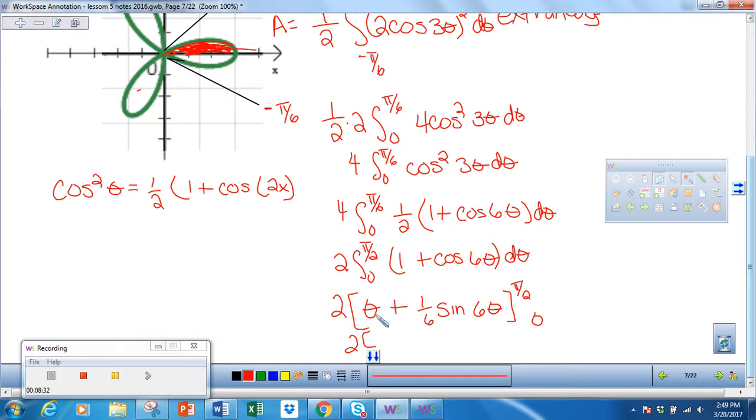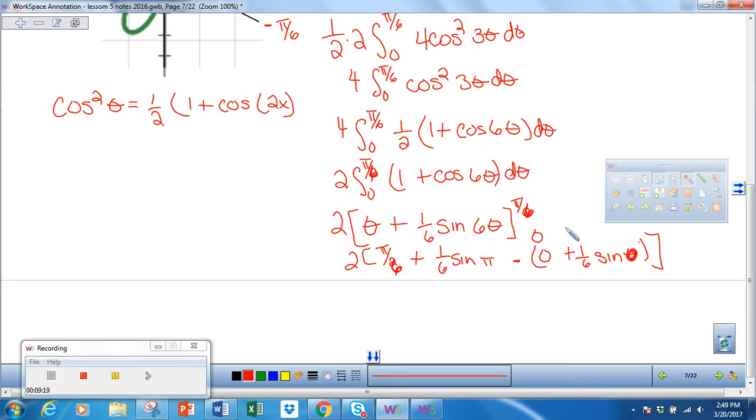This becomes two times π/6—I keep changing it to π/2, it's π/6, sorry—plus one sixth the sine of 6θ. When θ is π/6, that becomes π, so sine of π. Minus zero plus one sixth sine of zero. All of this is zero because the sine values are zero. So my answer is two times π/6, or π/3. That's my final answer.